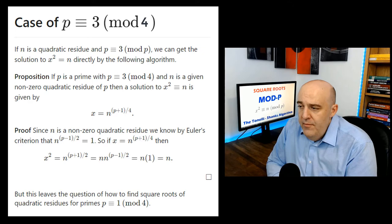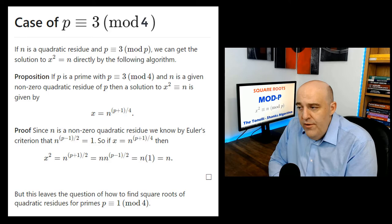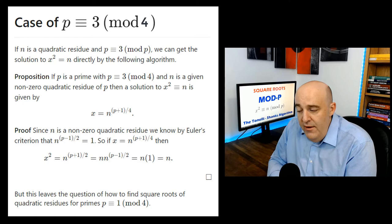Now, dealing with an odd prime p means p is either congruent to 1 or 3 mod 4. In the case that p is congruent to 3 mod 4, finding a solution to x squared equals n — finding a square root of n — is actually easy because there is a direct formula. If we're given a prime p congruent to 3 mod 4, and n is a non-zero quadratic residue, then x equals n to the power of (p plus 1)/4.